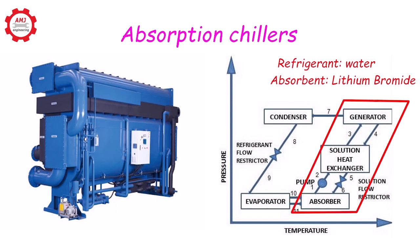The absorption process uses an absorber, generator, pump, and recuperative heat exchanger to replace the compressor in the vapor compression cycle.